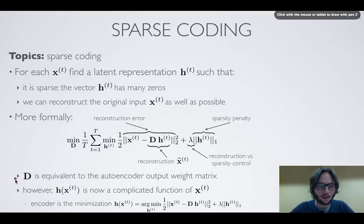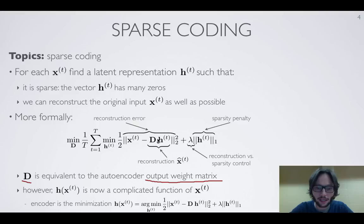If we remember the autoencoder that was discussed in previous videos, we can think of D as the equivalent of the autoencoder output weight matrix. So indeed it takes a latent representation and our autoencoder weight matrix multiplies that and that becomes our reconstruction. It's kind of like we have an autoencoder with a linear output activation function.